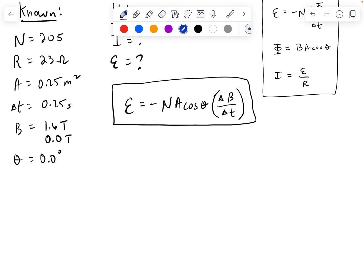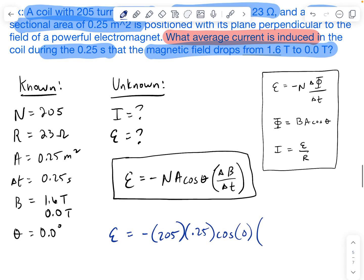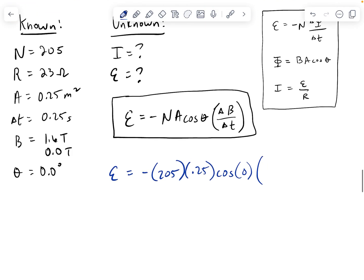So now we can start plugging in some values. So our electromagnetic field strength is going to be negative 205 times the 0.25. Cosine of 0 is 1, so we're really multiplying by 1 here. Okay, now the change in B over the change in time. So we went, we dropped, so we're going from 1.6 to 0. So we are basically losing that amount. So that's going to be final minus initial. And that all happens in the 0.25 seconds.